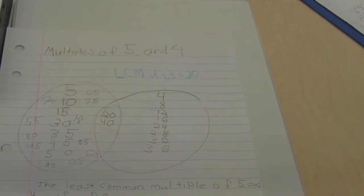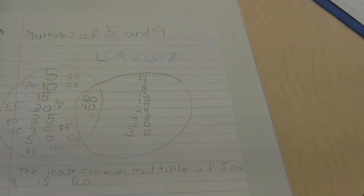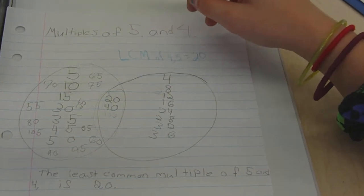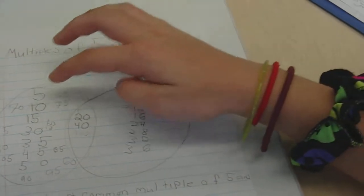Okay, go ahead. I made a Venn diagram of the multiples of 5 and 4. Nice. And the multiples of 5 is... Louder.